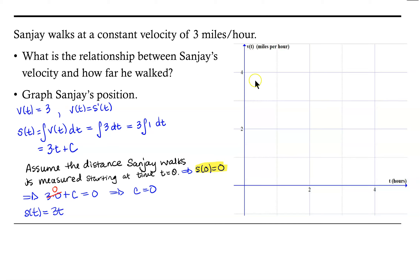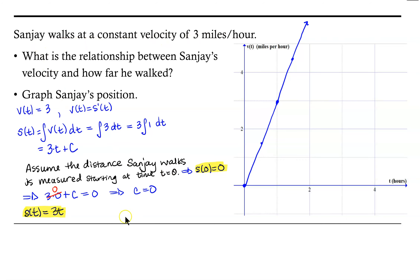Because Sanjay walked at a constant velocity of 3 miles per hour, notice that our position function is a constant multiple of time. After 1 hour, 3 times 1, Sanjay will have walked 3 miles; after 2 hours, 3 times 2, or 6 miles. Graphing this function creates a line. With a constant velocity, the position function is linear and the slope of that line equals the velocity.